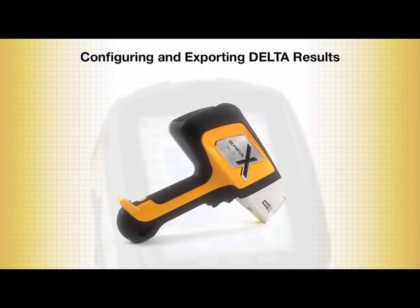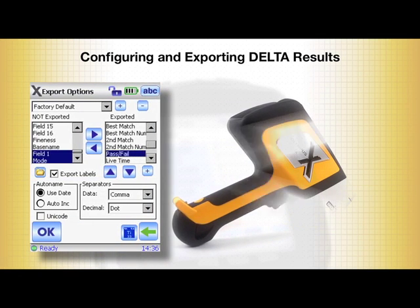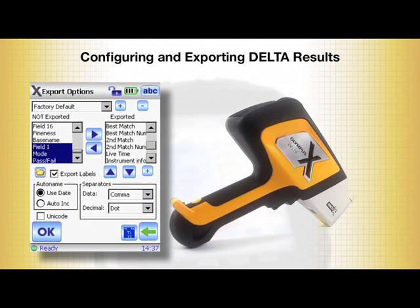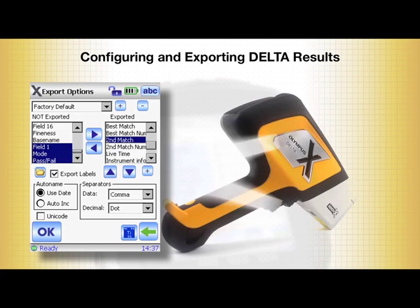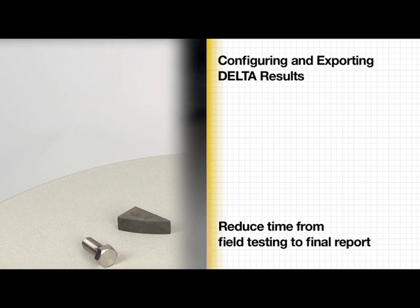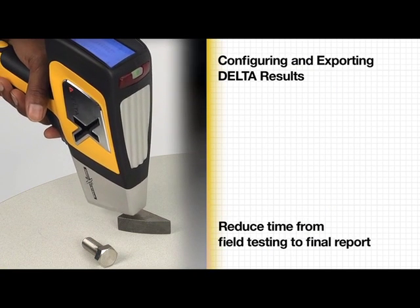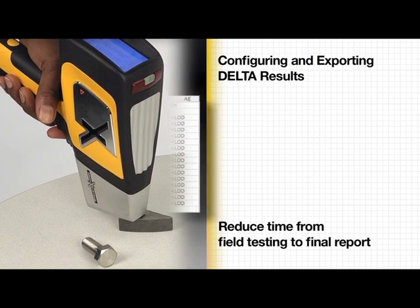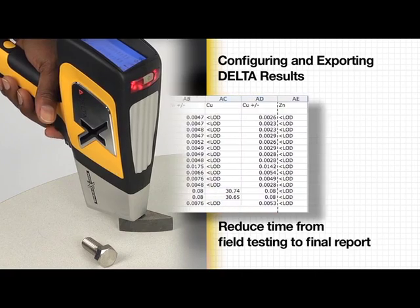This video will show you how easy it is to export test results from the Olympus Delta handheld XRF analyzer, and how to reduce the time required to go from field testing to the final report.